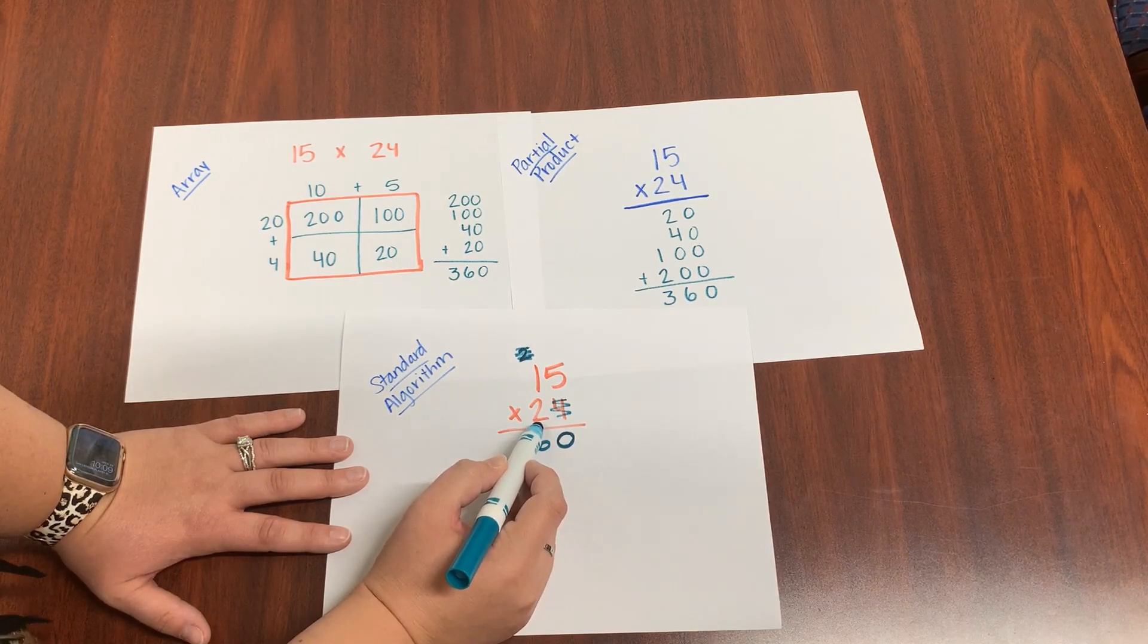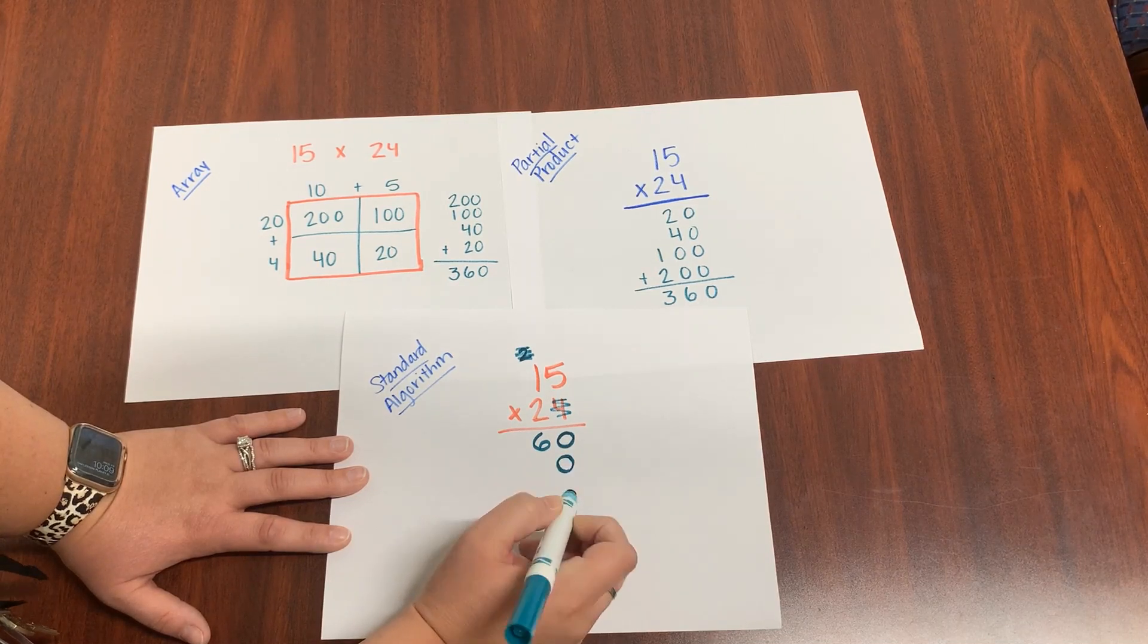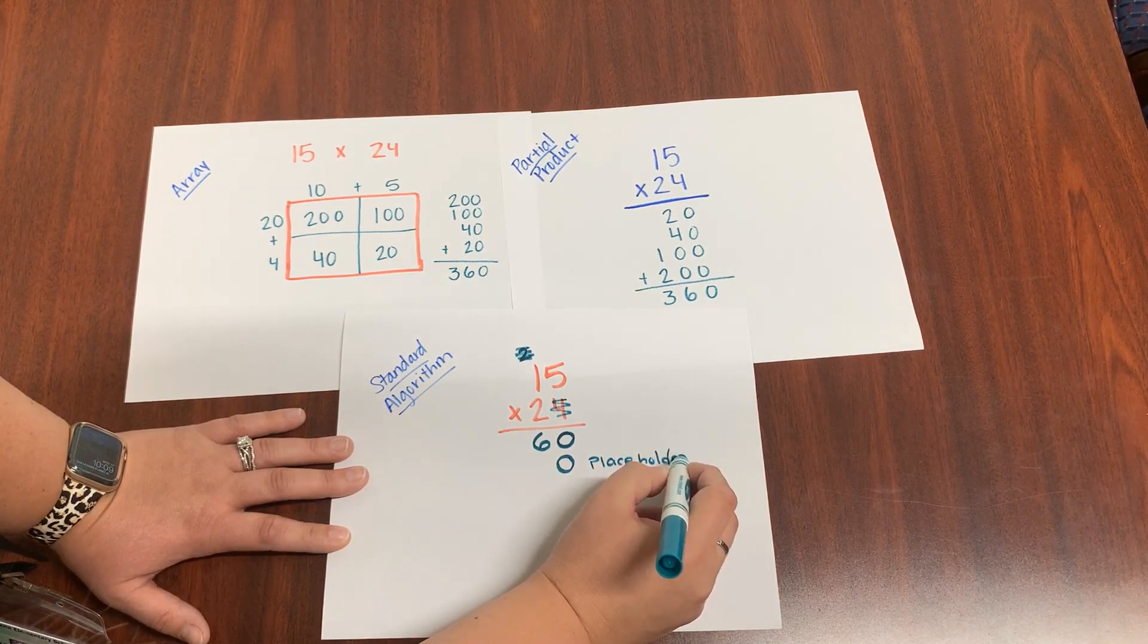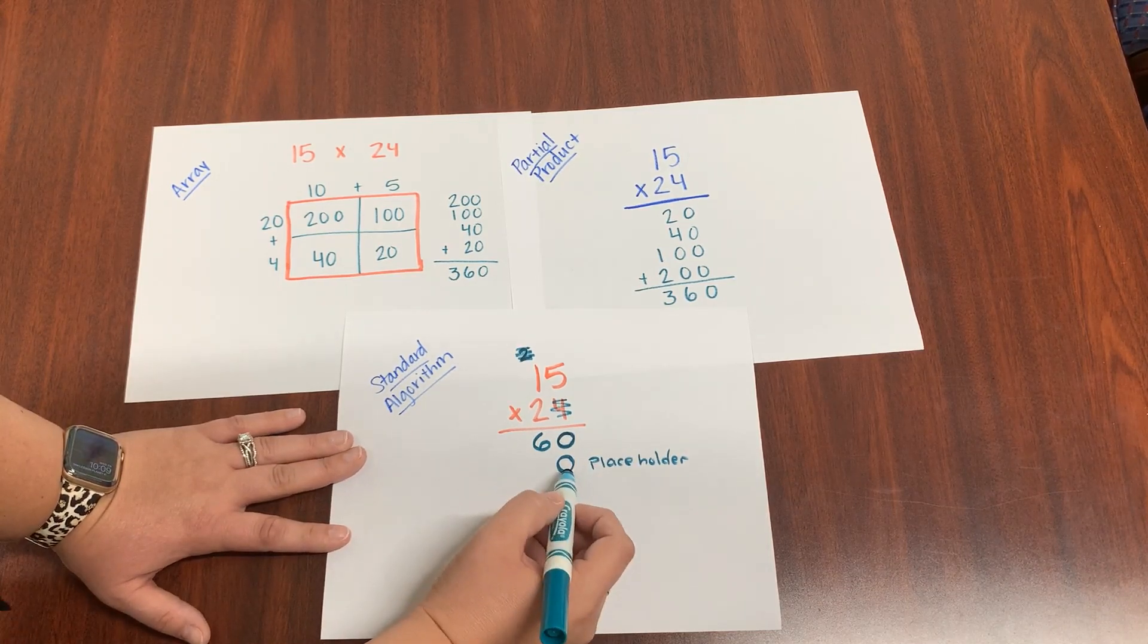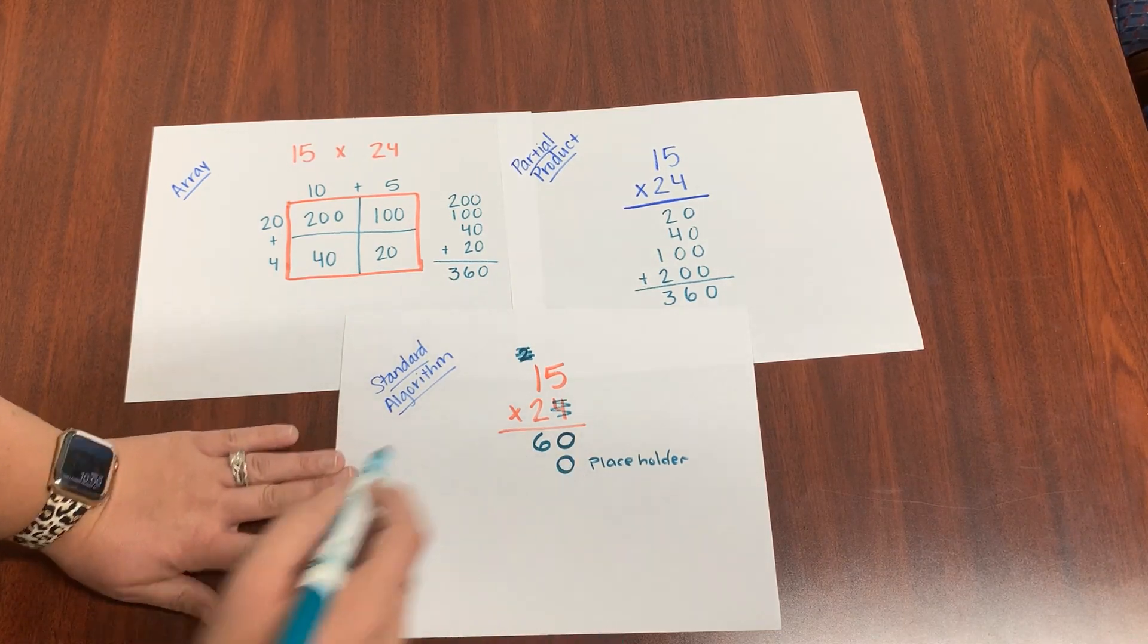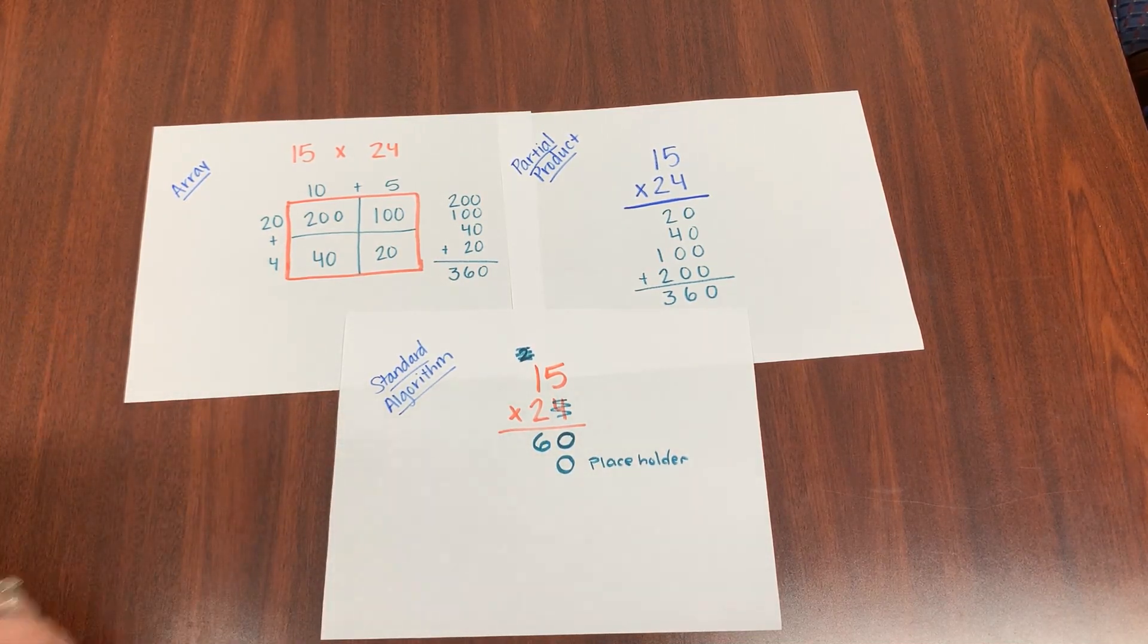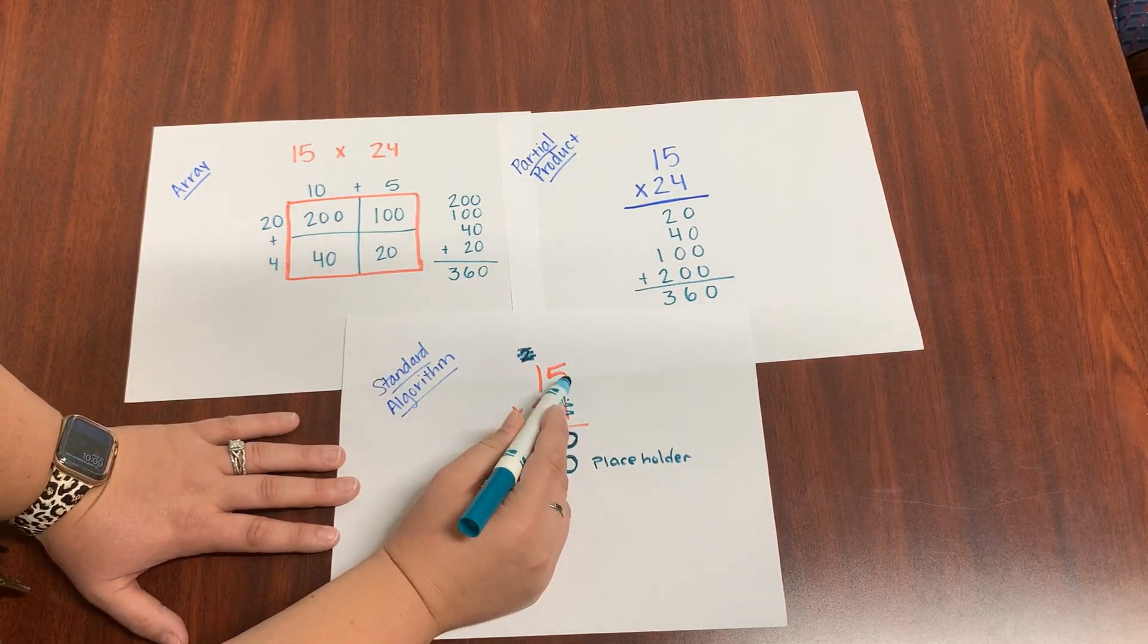Now, this is the tens. This is not just a two. It is two tens. And we need to put a tens placeholder right here to hold our place to represent the tens. You're going to do this every time. When you go to the second row of your multiplication problem in the standard algorithm, you're going to put a zero here. A lot of people just say it's a placeholder. I need you to understand that the reason that we're putting it there is because we are multiplying by the tens place.